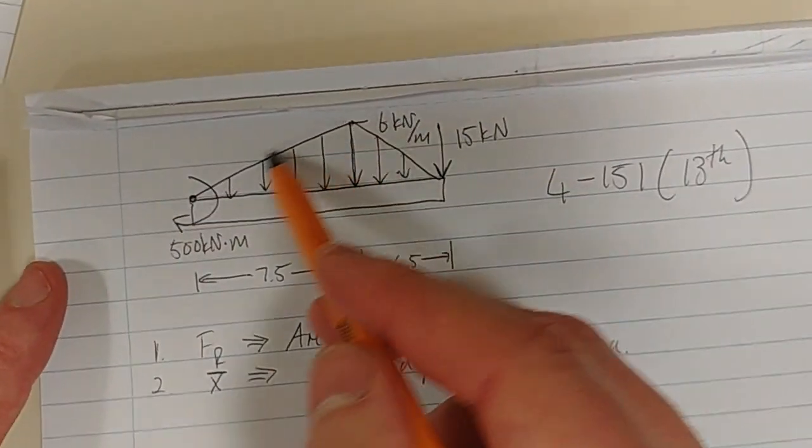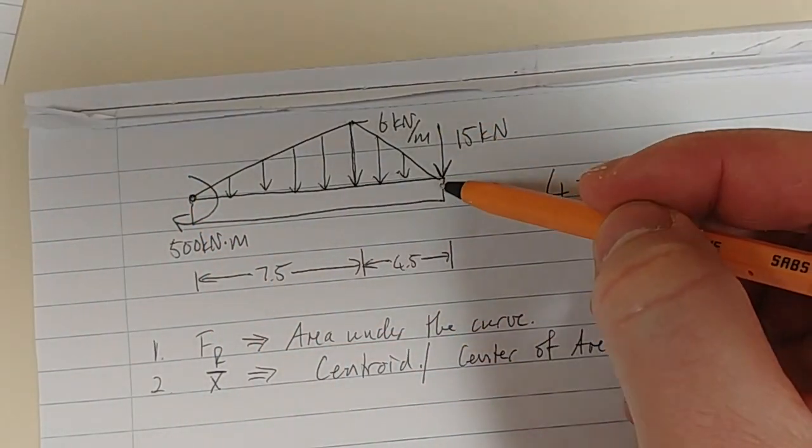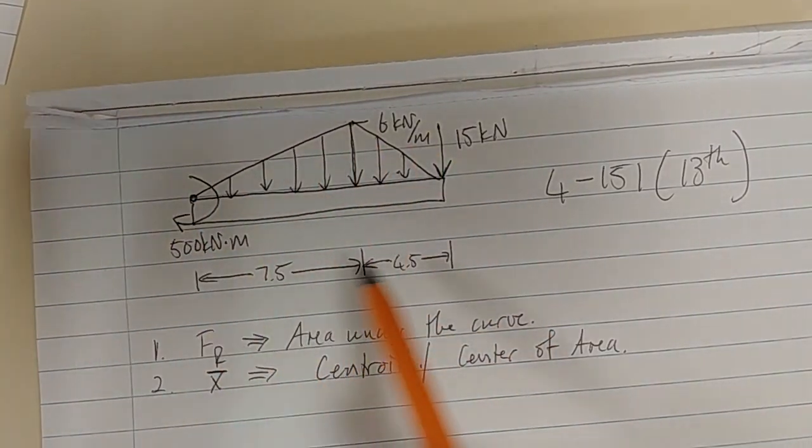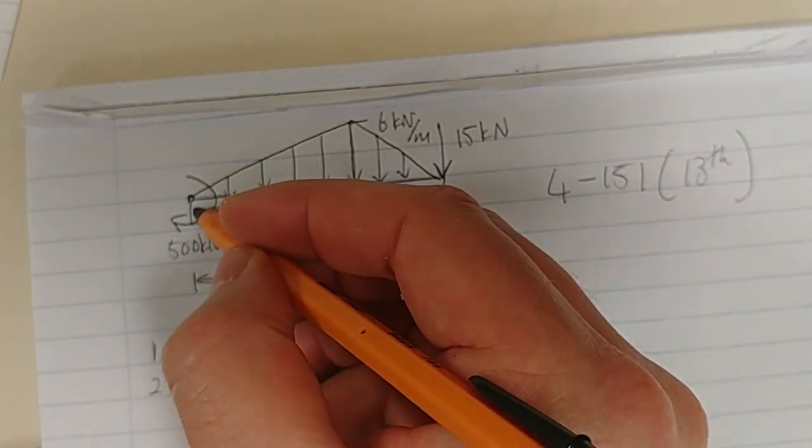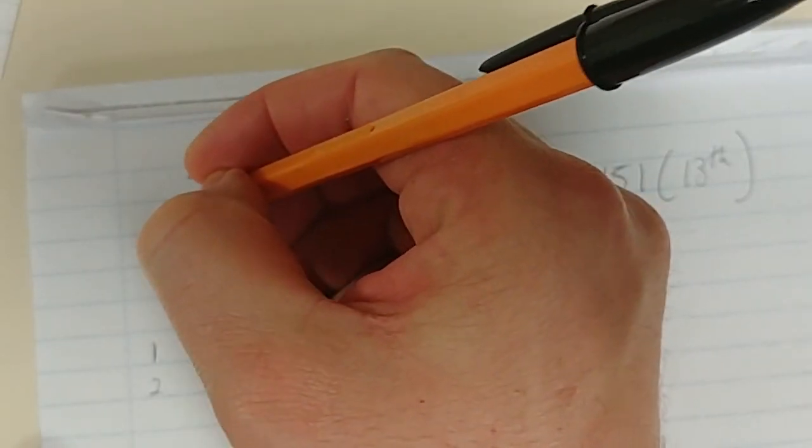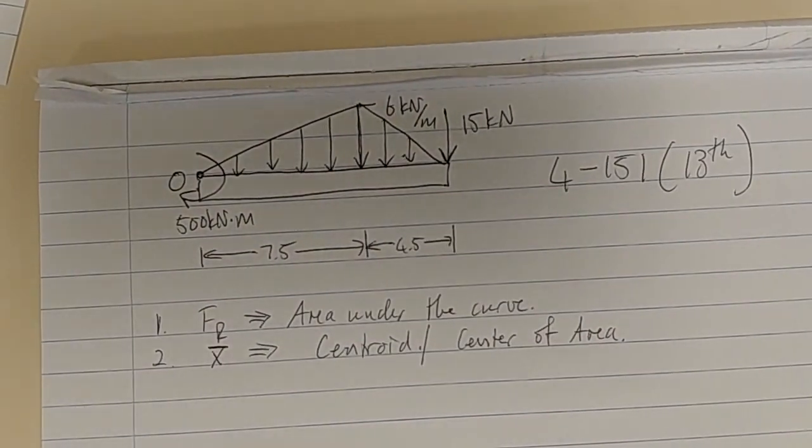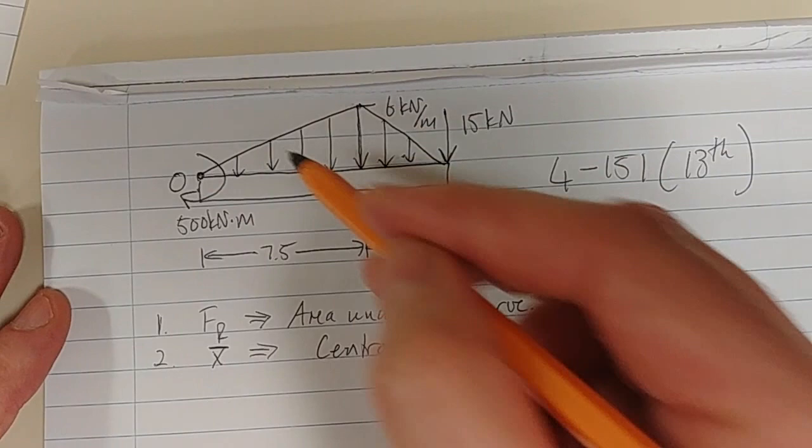So what do we see here? We've got distributed load, couple moment, and single point force. We want to simplify this whole system to one single force acting at a distance from point O. Let's first look at this distributed area.